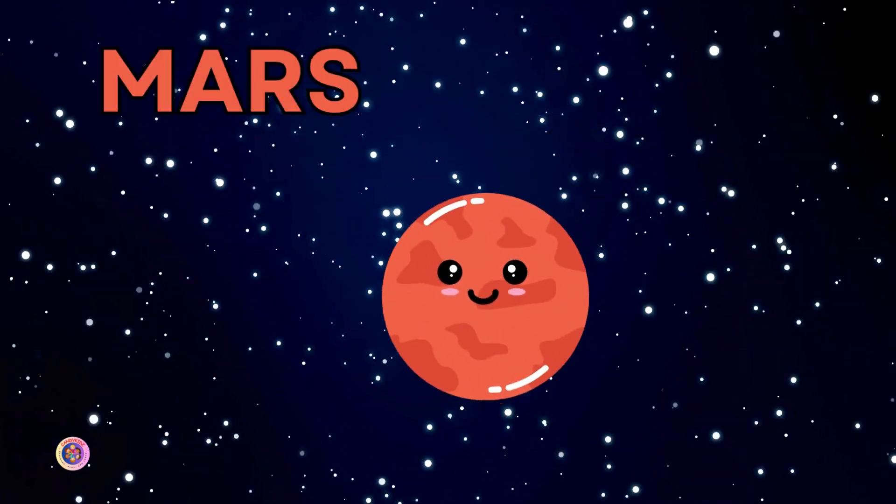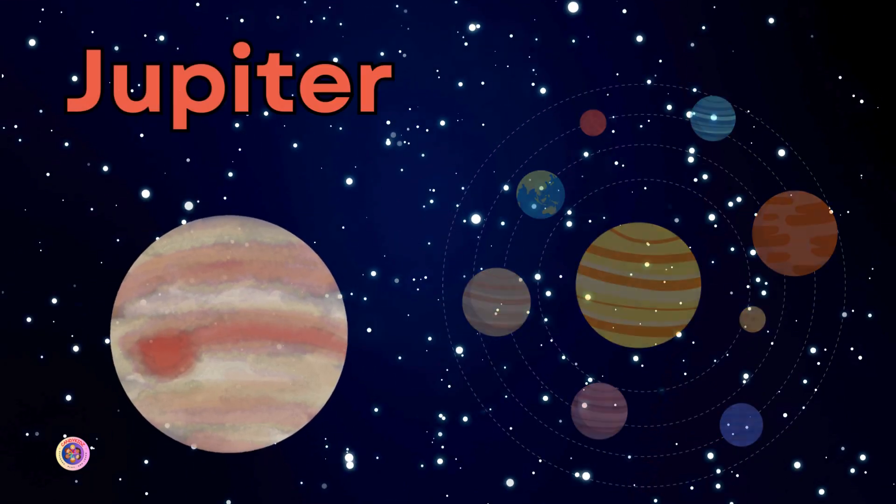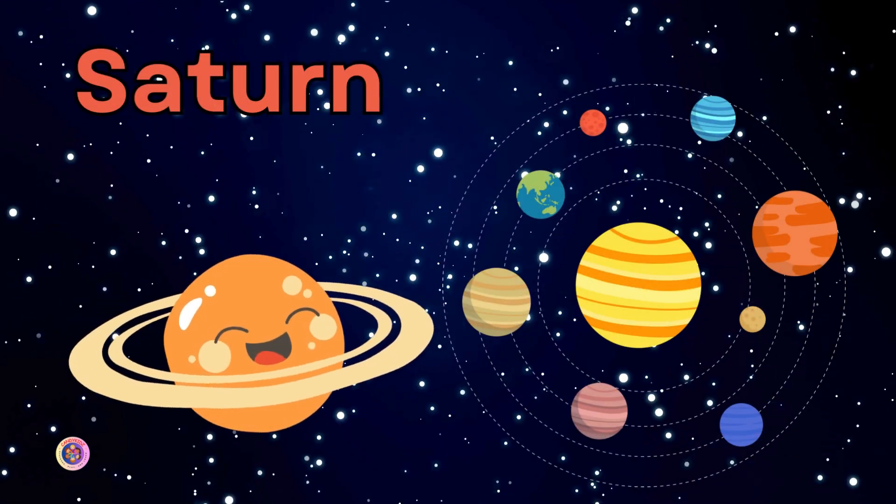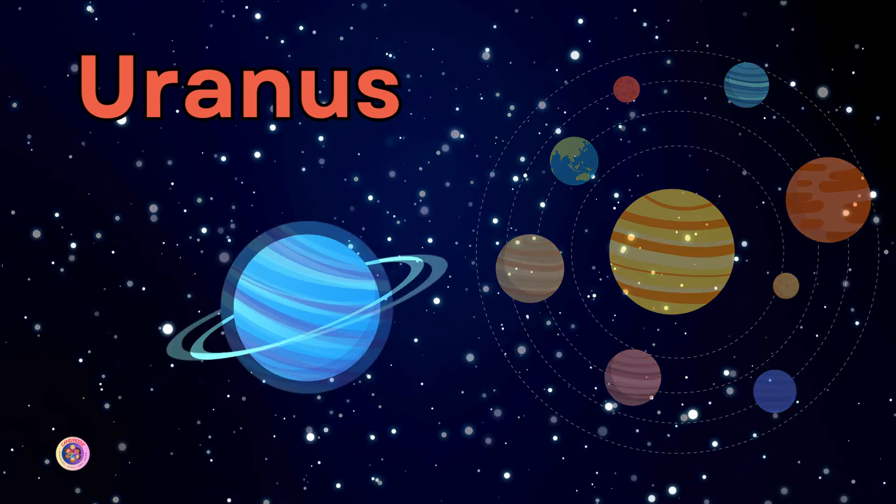Mars is red with dusty flames, Jupiter has giant chains of rings, Saturn's rings spin all around, Uranus tilts upside down.